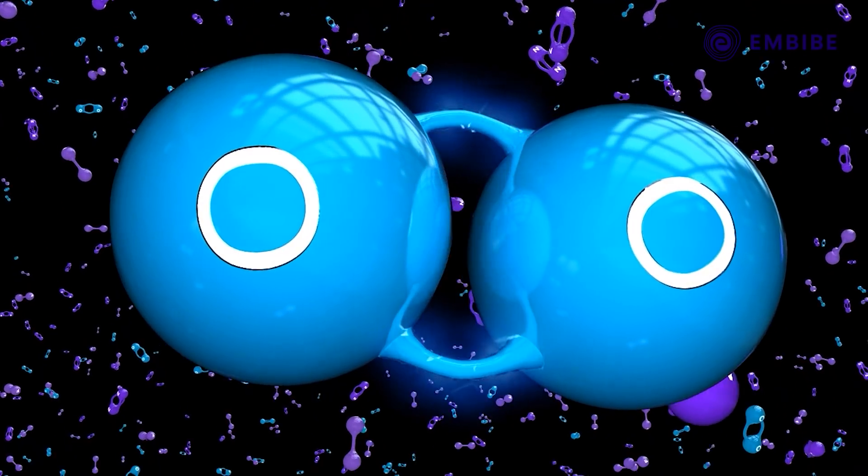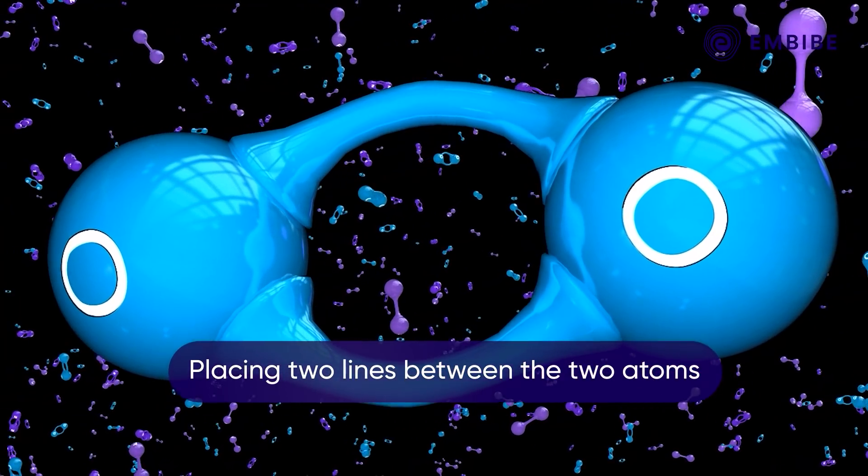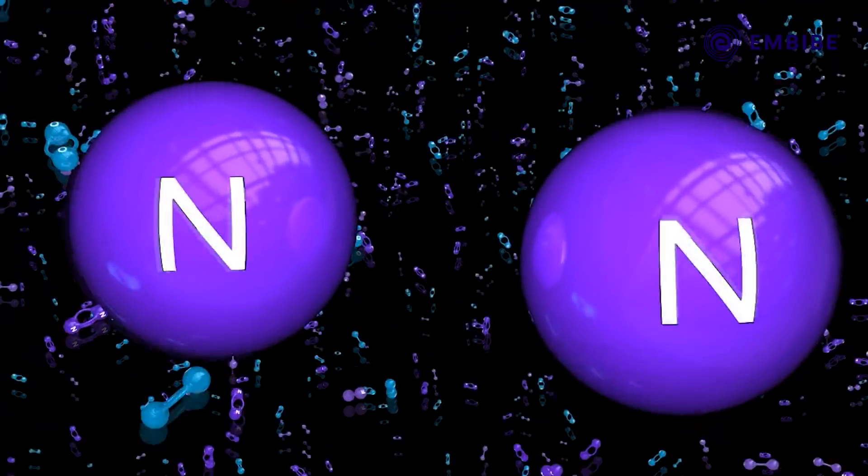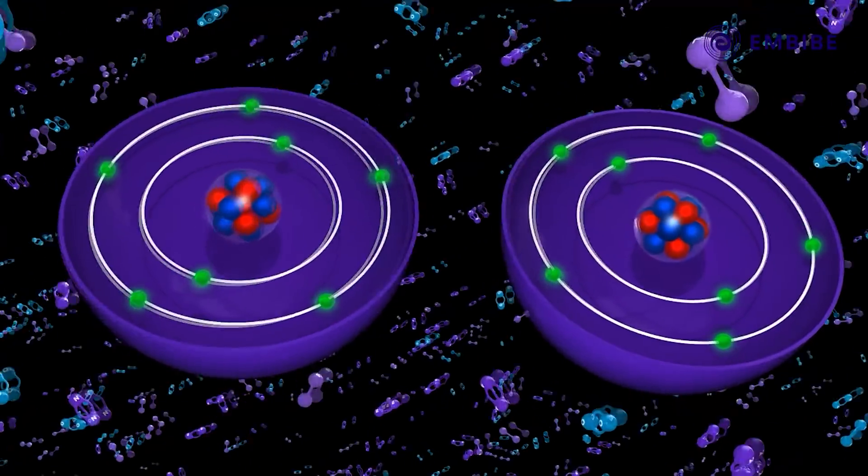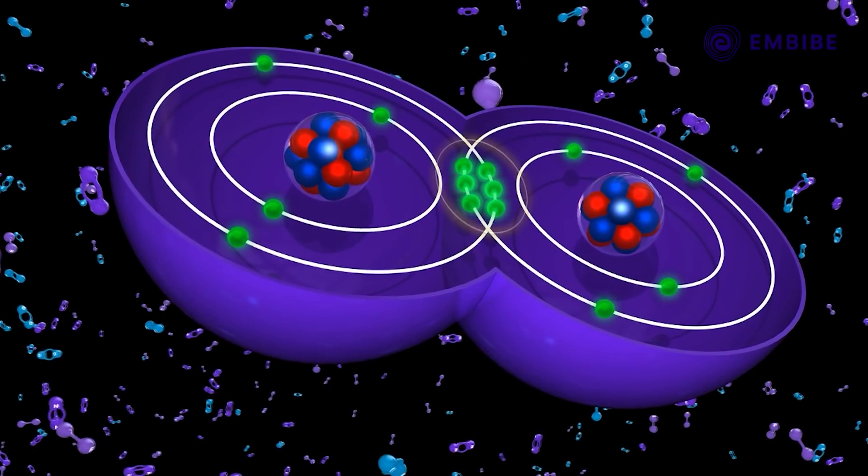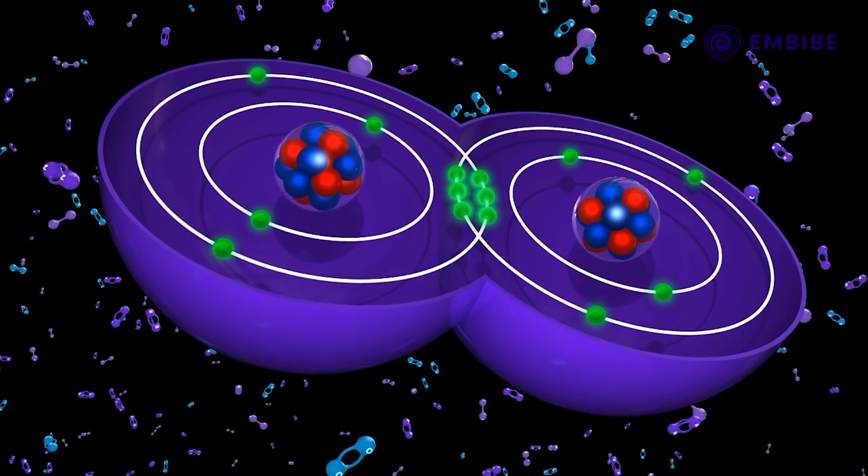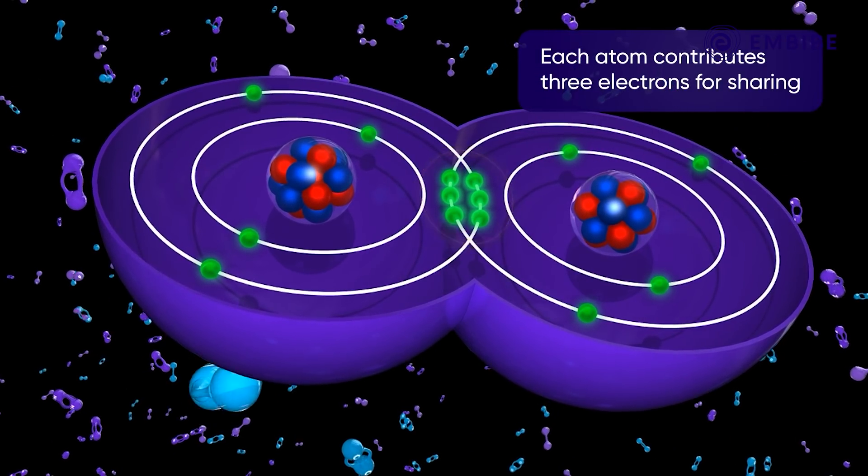Triple bond: A triple bond consists of three and is formed by sharing of three electron pairs between the two combining atoms. Here, each atom contributes three electrons for sharing. A triple bond is denoted by placing three lines between the two atoms.